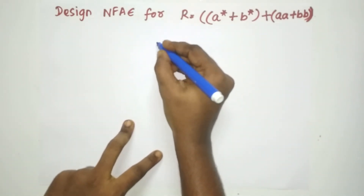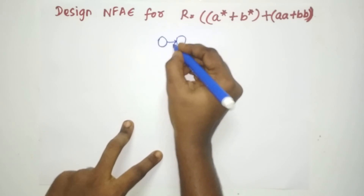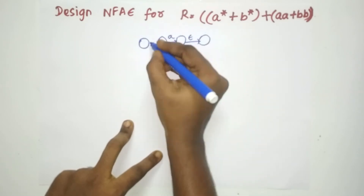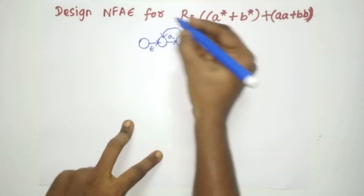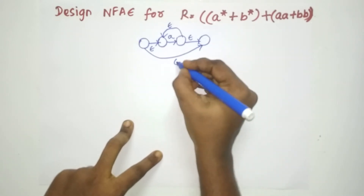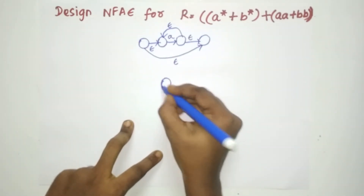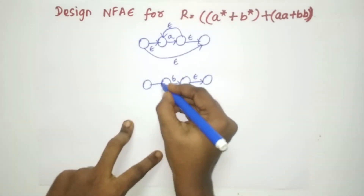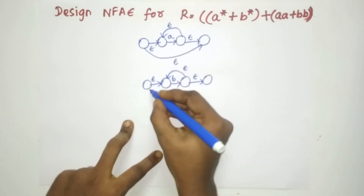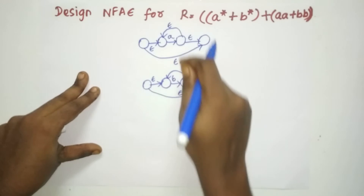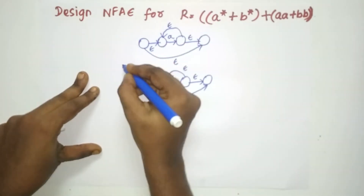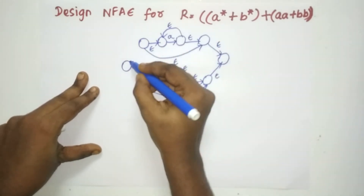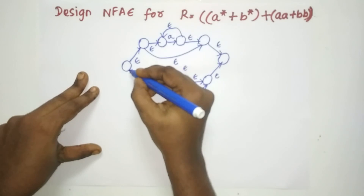Create A* first: you will have an A-transition with initial and final states accordingly. Then create B*: you will have B* with a new initial and final, and the Epsilon transitions made accordingly by Thomson's construction. Now A* is drawn and B* is drawn. To make A*+B*, create another new initial and new final state, connecting both sub-machines with Epsilon transitions. This completes R1 = A*+B*.